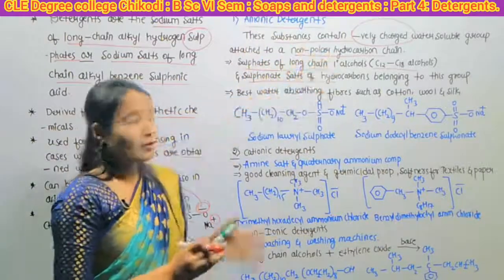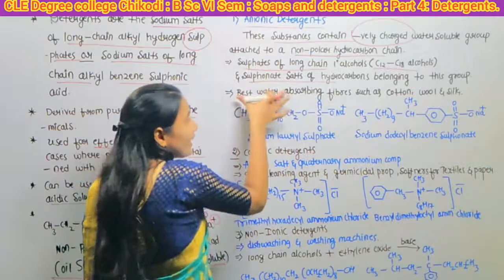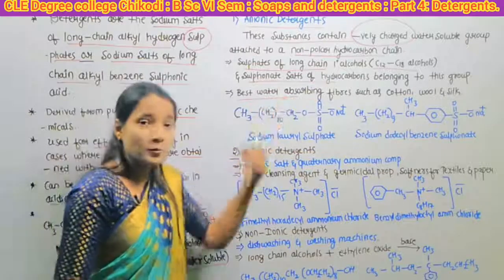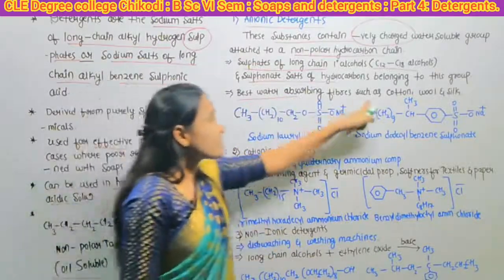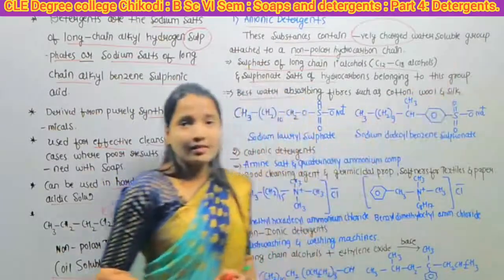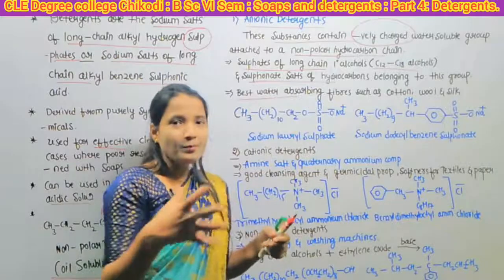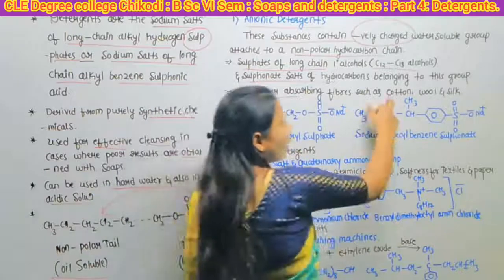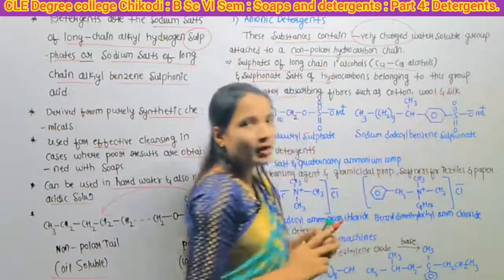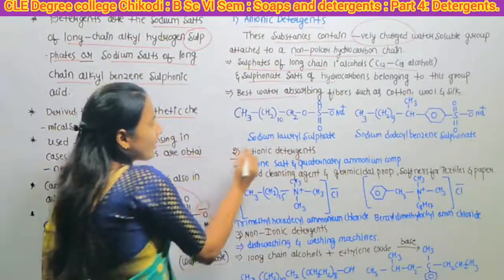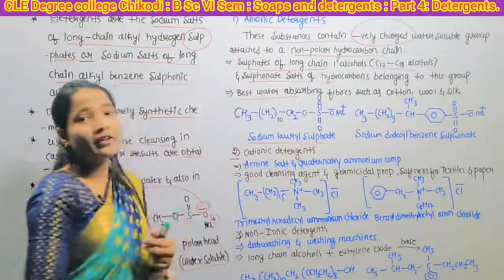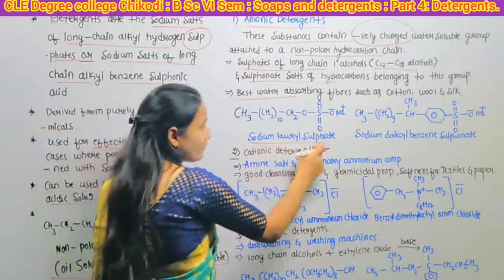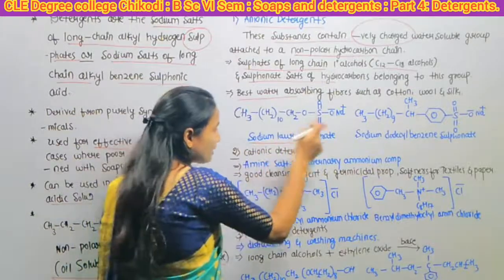Sulfates of long chain primary alcohols and sulfonate salts of hydrocarbons are the groups belonging to anionic detergents. These anionic detergents are best for water absorbing fibers such as cotton, wool, and silk. Anionic detergents are used when washing cotton, wool, or silk.